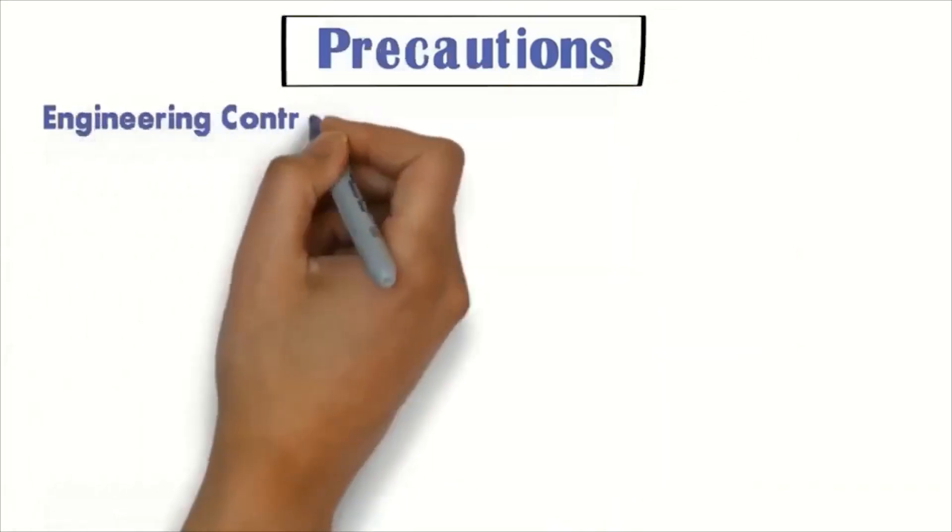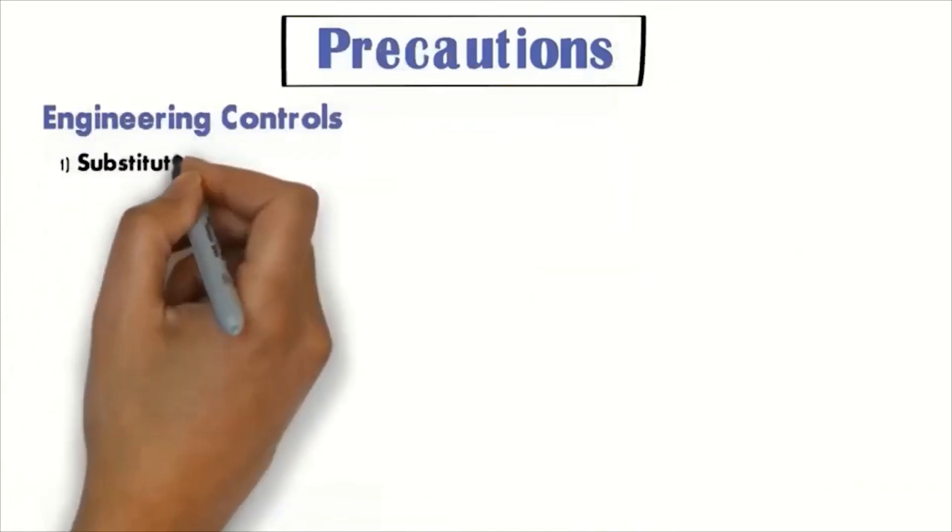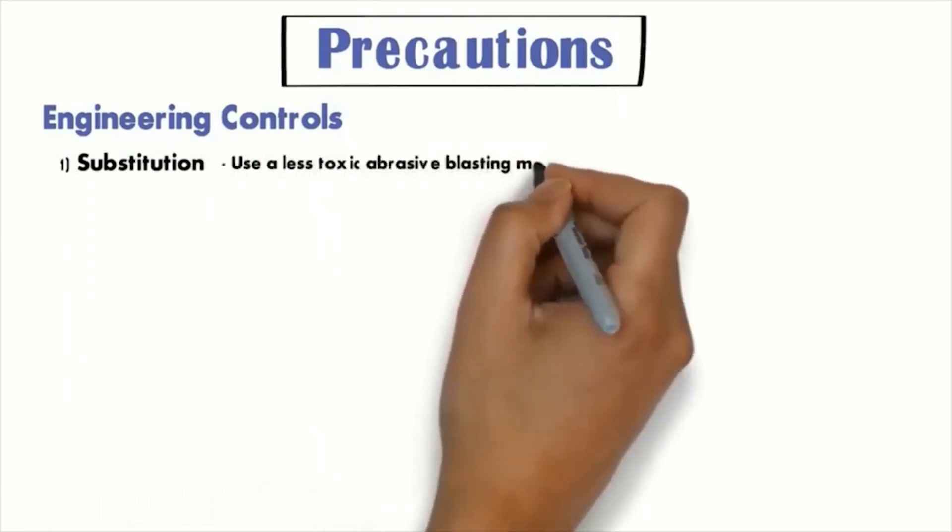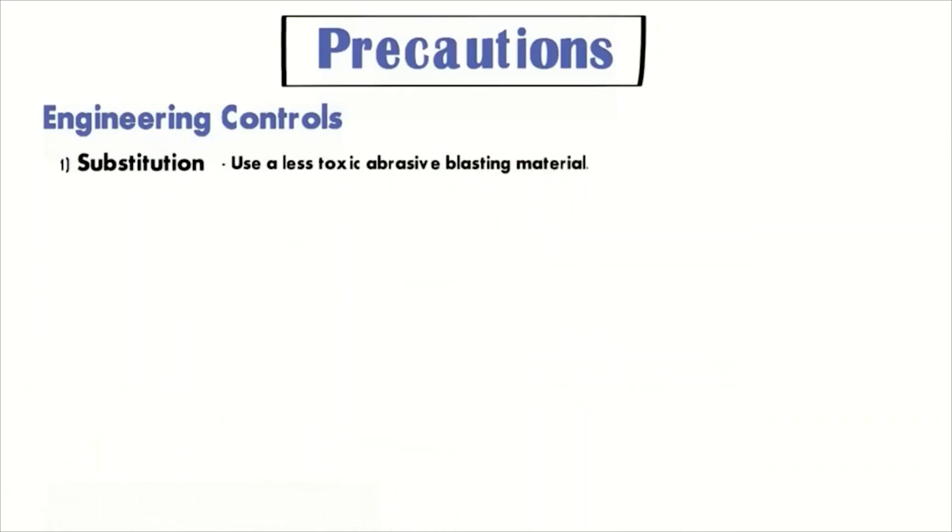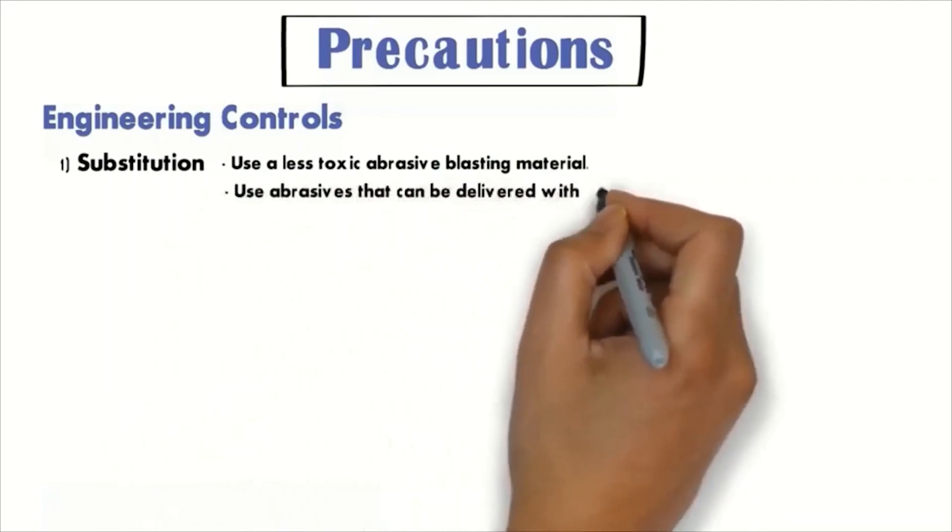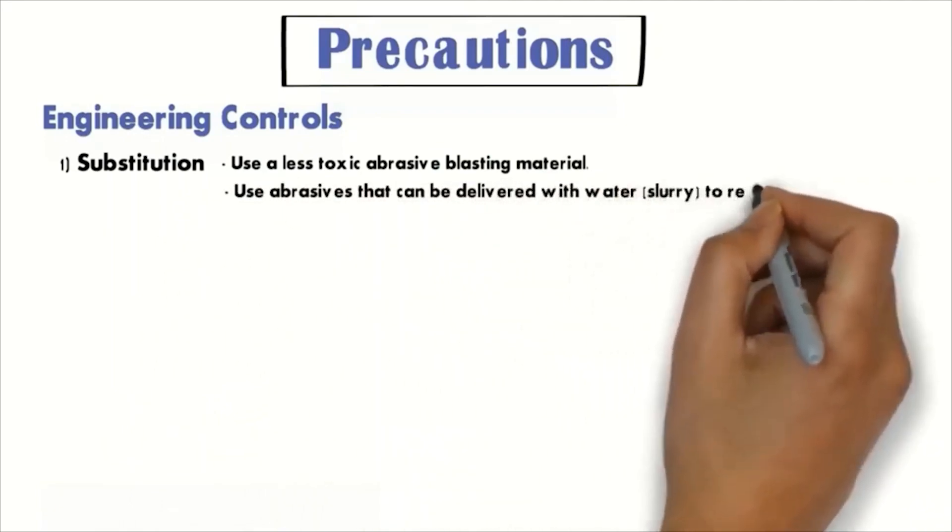Number one is engineering controls. The safety precautions for sandblast engineering controls can be controlled by the engineering way. There are several parts of this: substitutions - use the least toxic abrasive blasting materials and also use abrasive that can be delivered with water slurry to reduce dust.